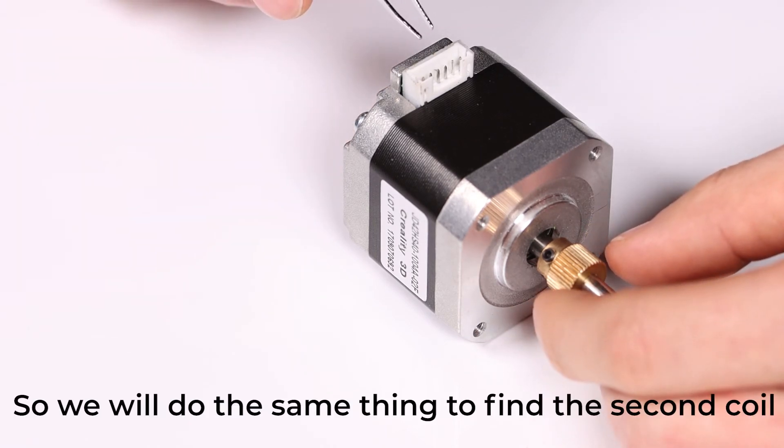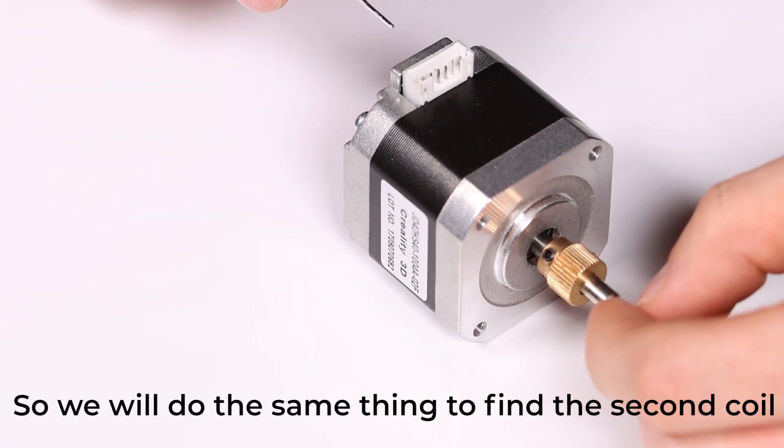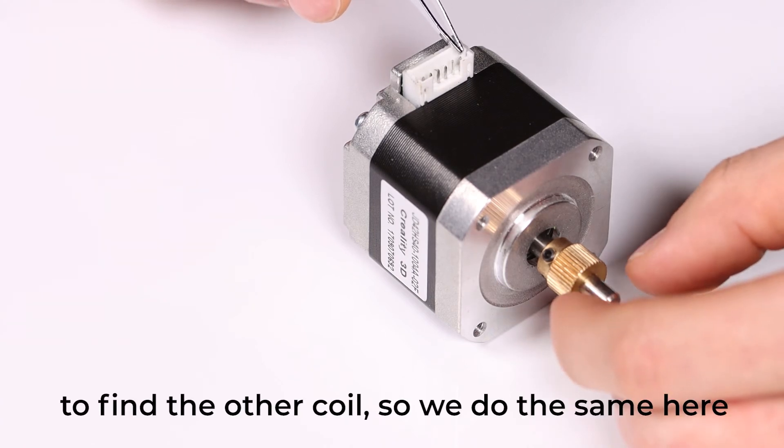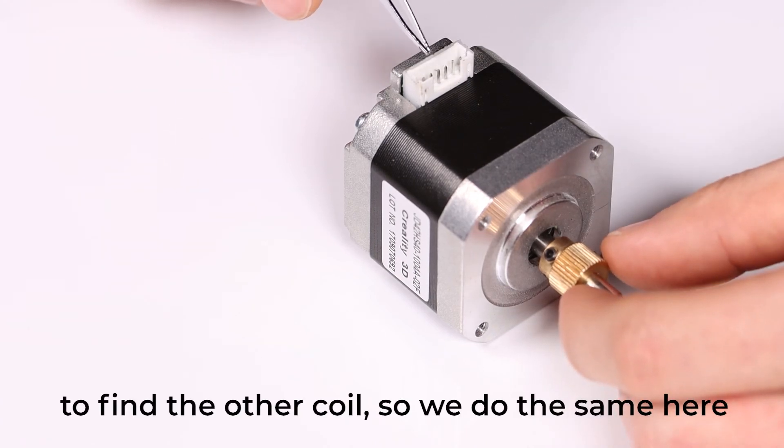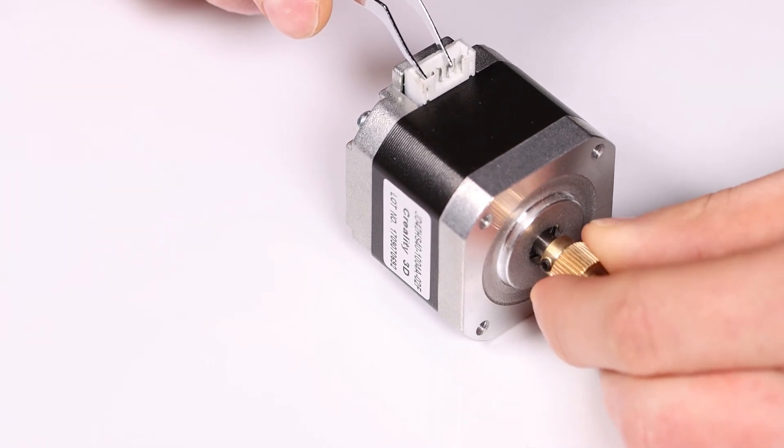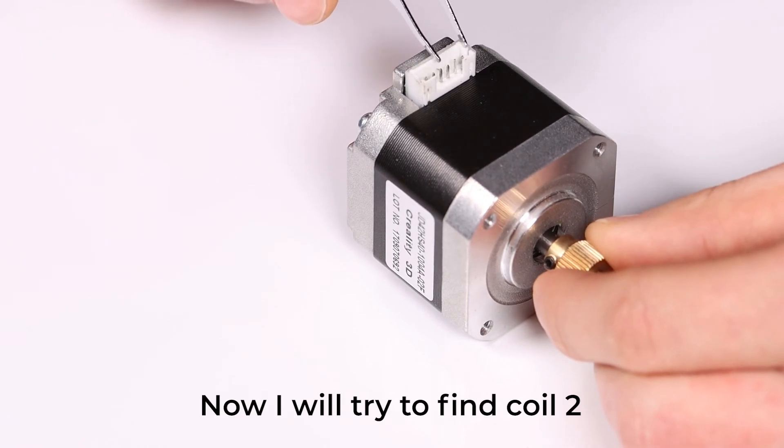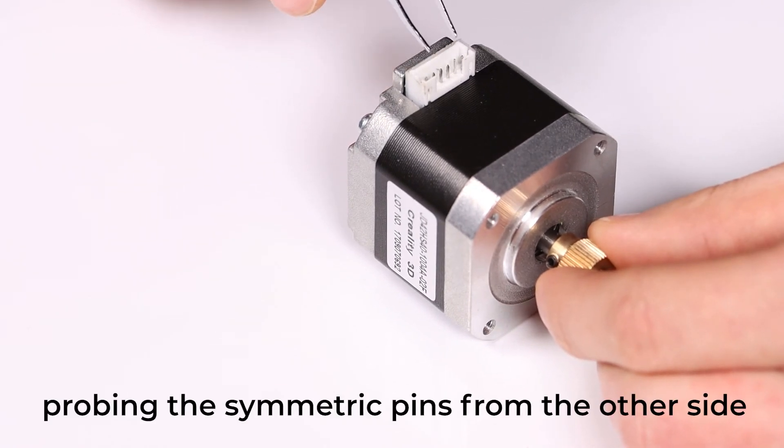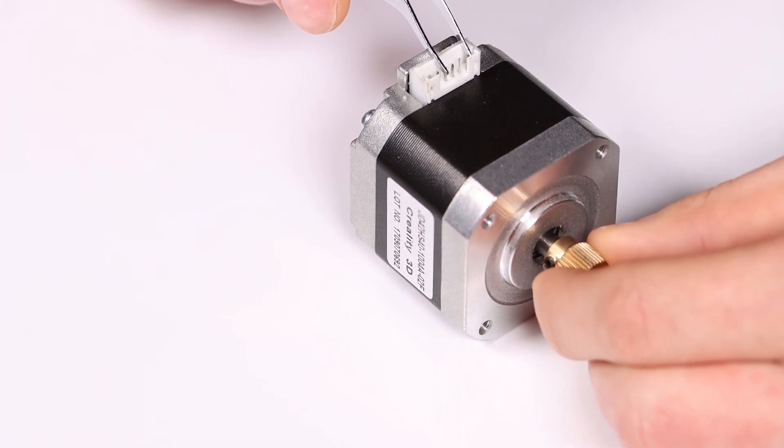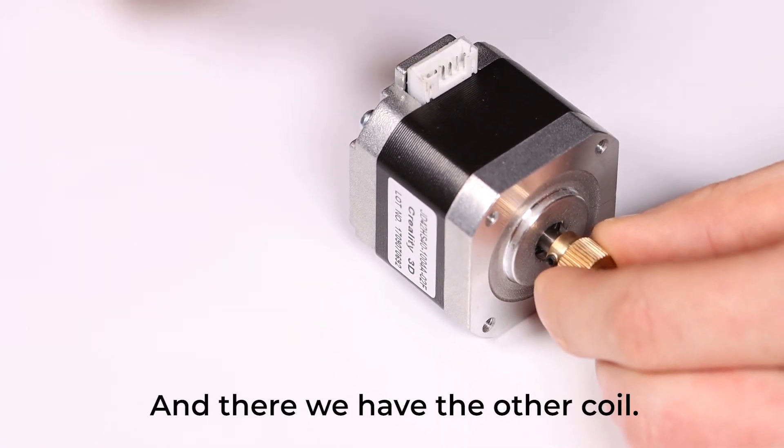So we will do the same thing to find the second coil. Try it from the other side to find the other coil. It was four pins apart for coil one, and then I will try four pins apart from the other side. And there we have the other coil.